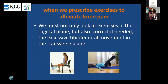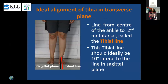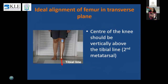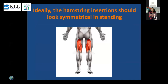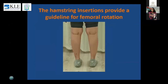When we prescribe exercises, we should also look at the excessive tibiofemoral rotation occurring in the transverse plane in these patients. Looking at ideal alignment of the tibiofemoral joint: if you draw a line from the center of the ankle to the second metatarsal, that is called the tibial line. Ideally, the tibial line should be about 10 degrees lateral to the sagittal plane. The center of the knee or the patella should be vertically above the tibial line.